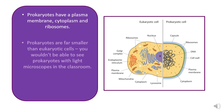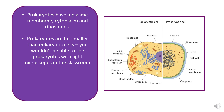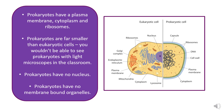Prokaryotes are much smaller than eukaryotic cells. If you used the light microscopes in the classroom, you would be able to see some components of eukaryotic cells; however, you probably wouldn't be able to visualize prokaryotic cells on standard slides — you would need an electron microscope. Prokaryotes also have no nucleus: this here is the genetic material in a prokaryotic cell, which we'll look at in more detail on the next slide.